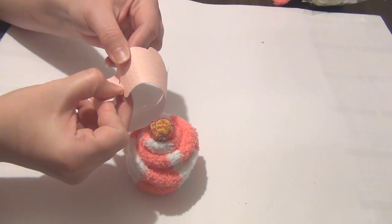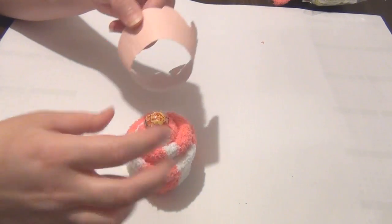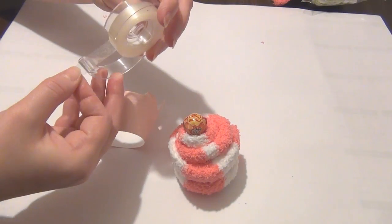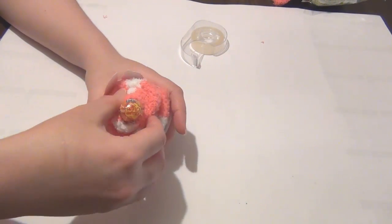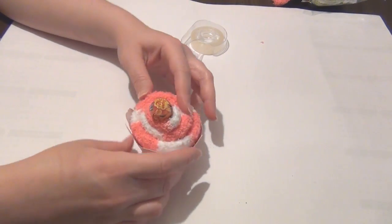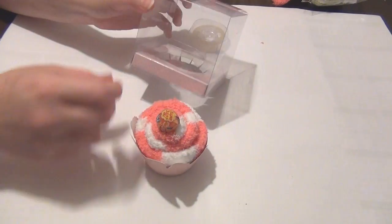And just to hold that together take an elastic band and place it around the sock. Next take your cupcake wrapper and just put that together. I ended up using a little bit of tape to hold that together. And simply place that inside your cupcake wrapper and that cupcake is complete.